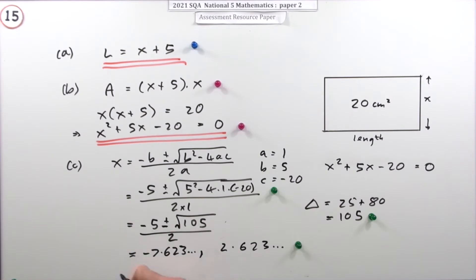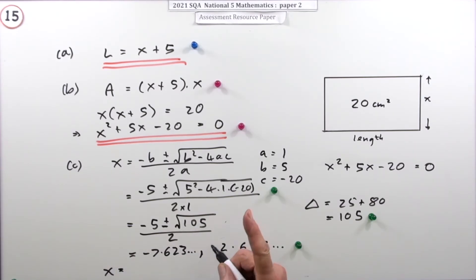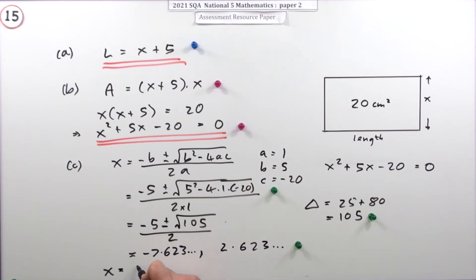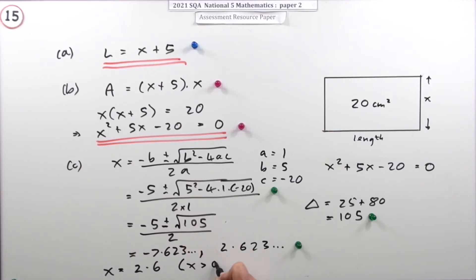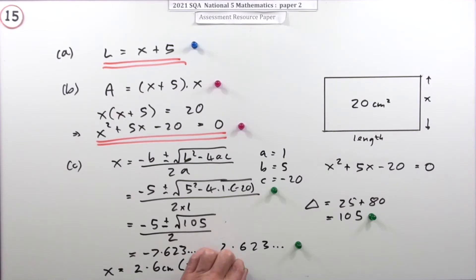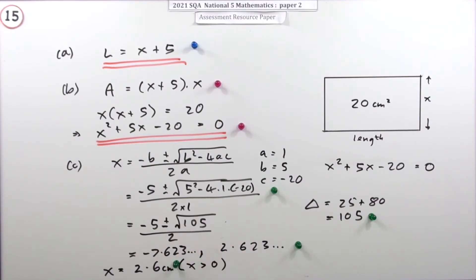The appropriate value of x, given the context, must be the positive one. To one decimal place that is 2.6. The reason is x is greater than zero — measurements in centimetres must be positive. You don't need to state the units, but it's good practice.